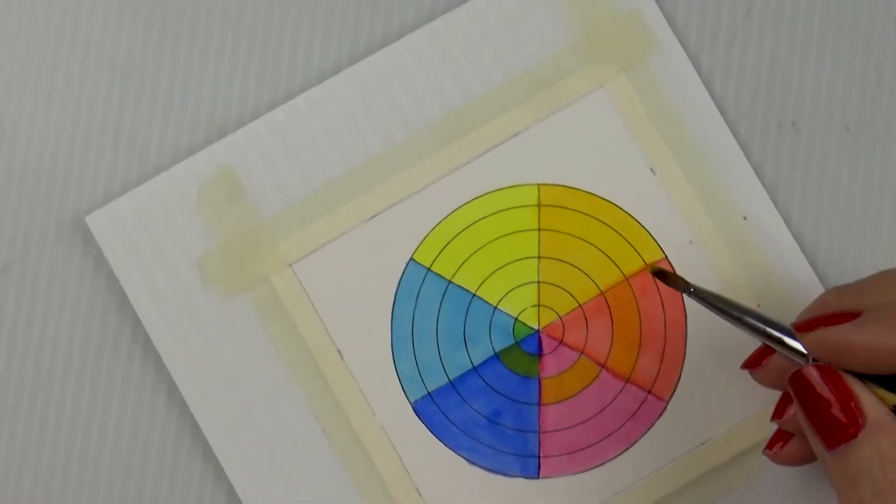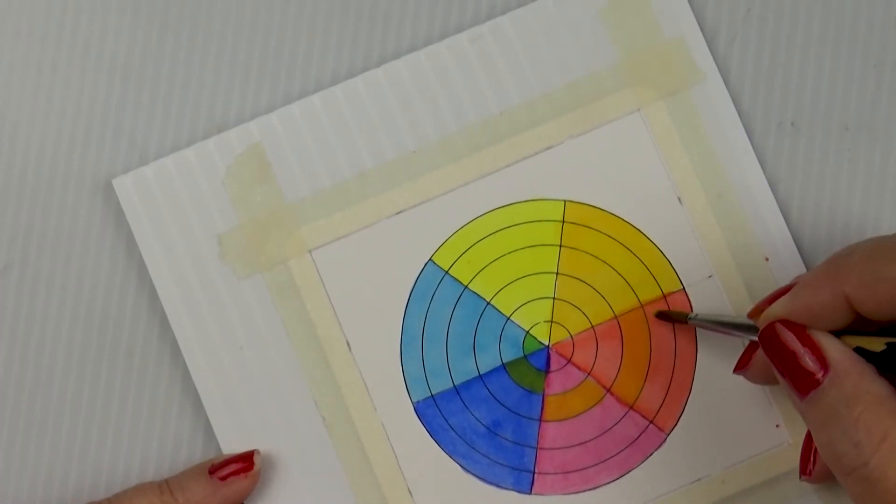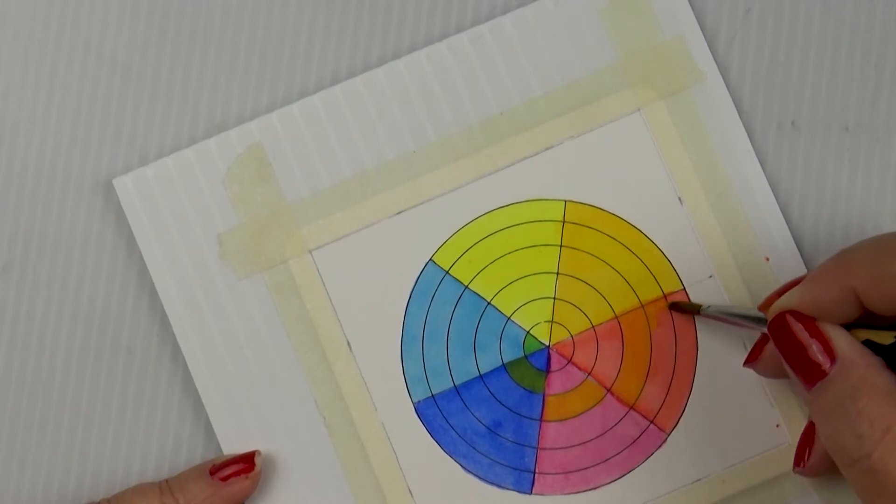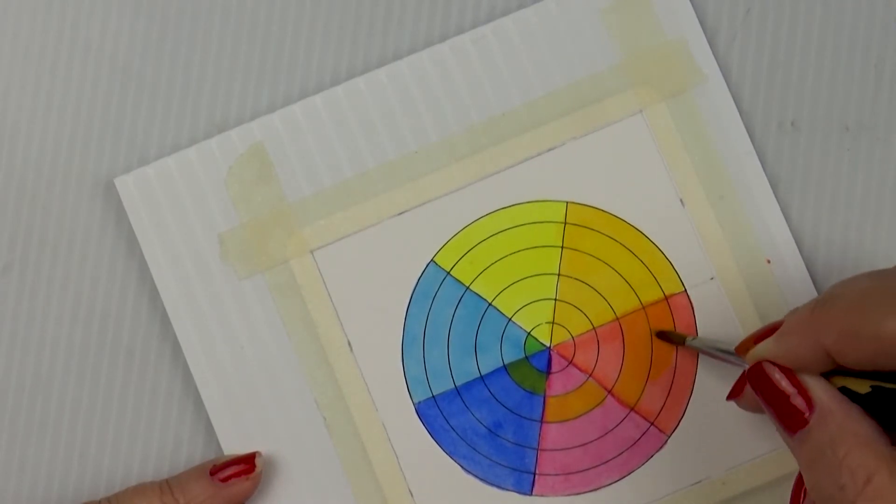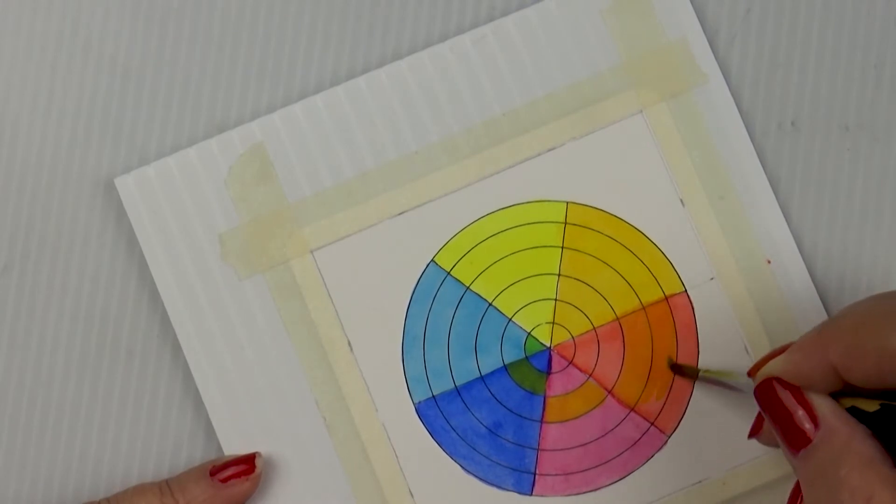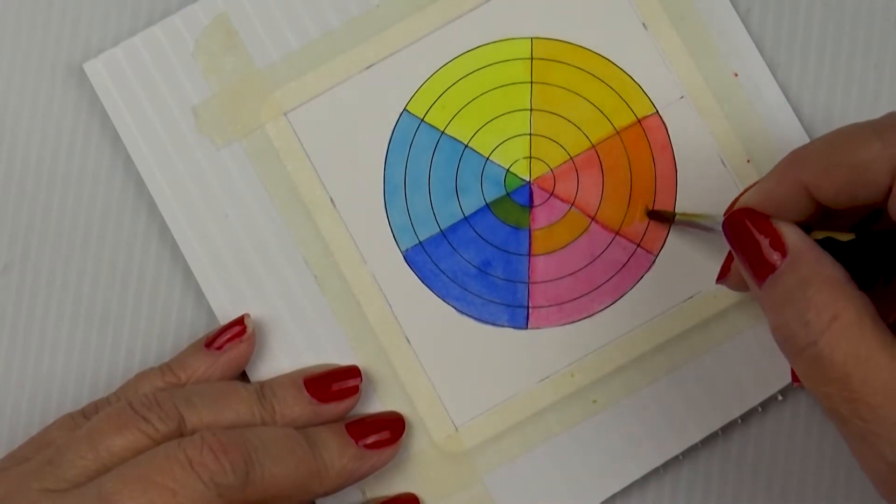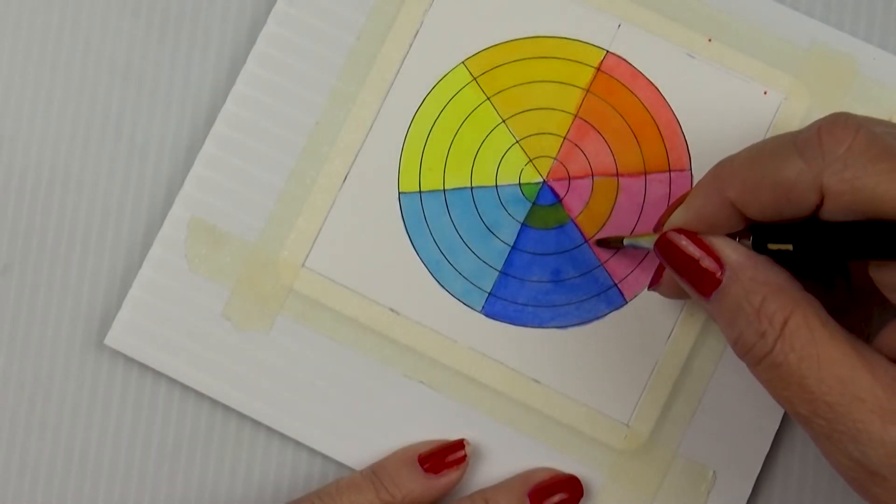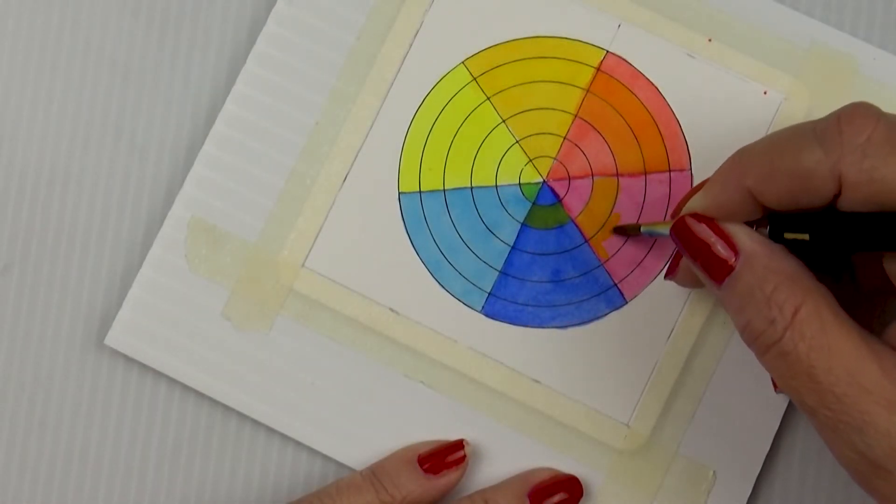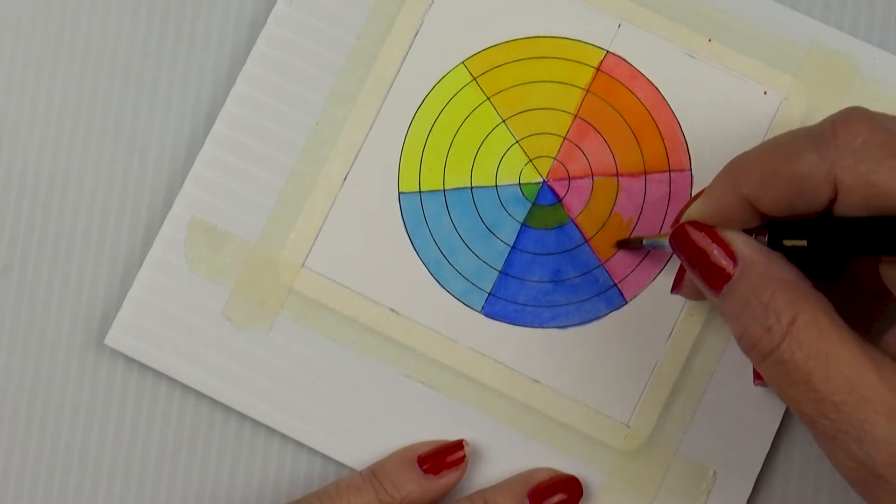You're probably getting the idea now how the pattern works. I'm going to take the New Gamboge and paint it into the second concentric circle of the Pyrrole Scarlet. Then we're going to put New Gamboge in the third concentric circle of Quinacridone Rose.